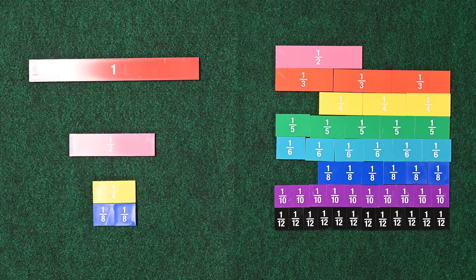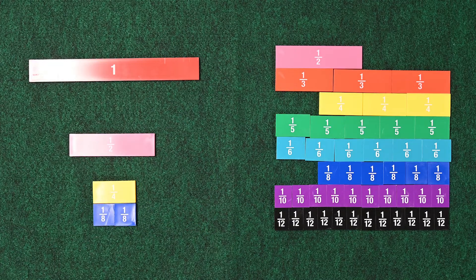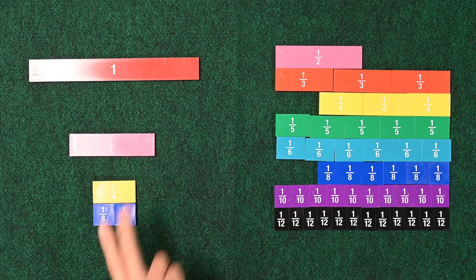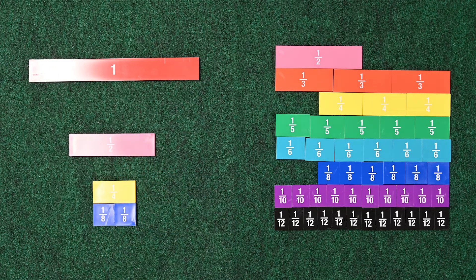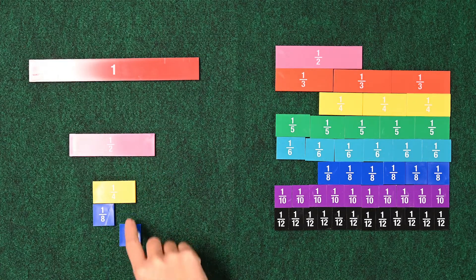So we saw earlier 2 4ths is 1 half. Now we know 2 8ths is 1 4th. Okay, let's put the 1 8ths and the 1 4ths back.